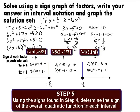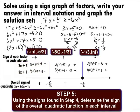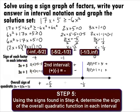In Step 5, we use the signs found in Step 4 to determine the sign of the overall quadratic function in each interval. In the first interval of negative infinity to negative 5 halves, we have a negative times a negative, so the sign of the product is positive. In the second interval of negative 5 halves to negative 1 third, we have a positive times a negative, so the sign of the product is negative.